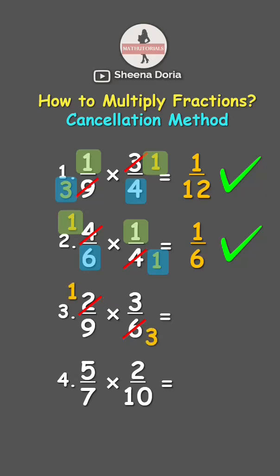Also, we can see that we can still divide 3 and 9 by 3. So 3 divided by 3 is 1, while 9 divided by 3 is 3. Now let's multiply. 1 times 1 is 1, while 3 times 3 is 9. Answer: 1/9.